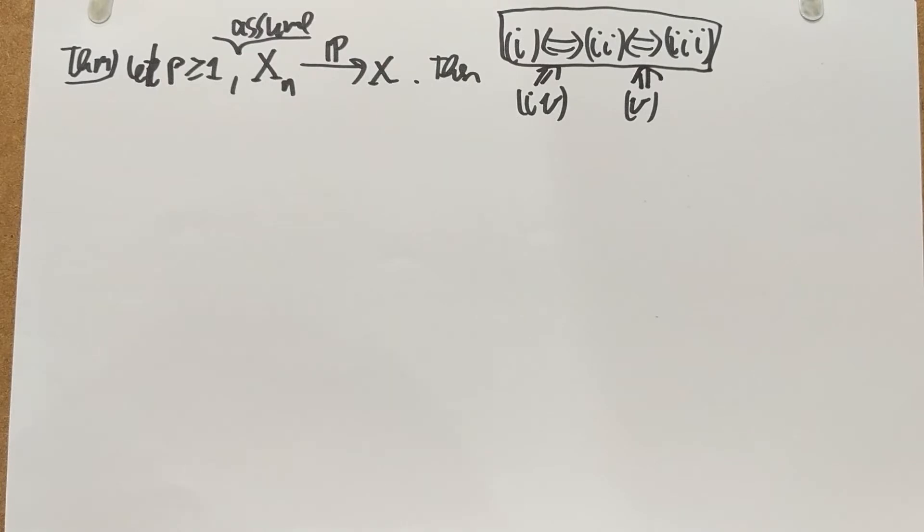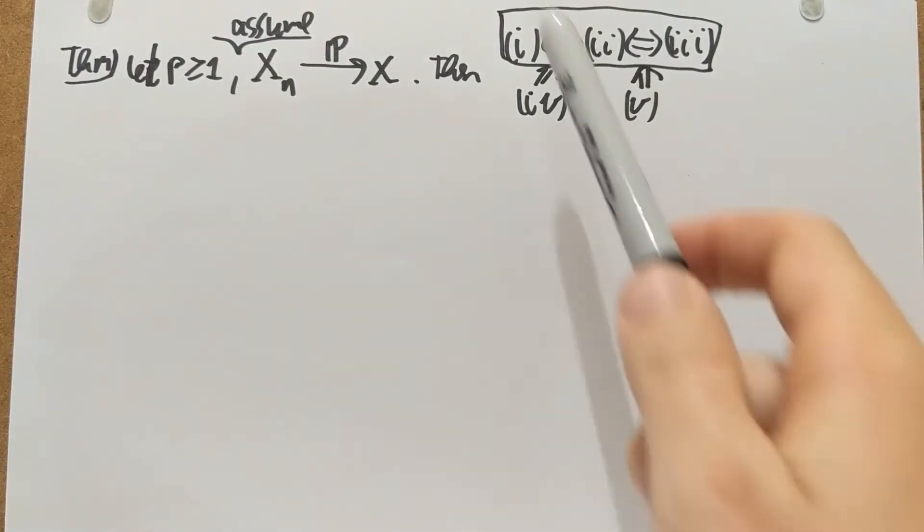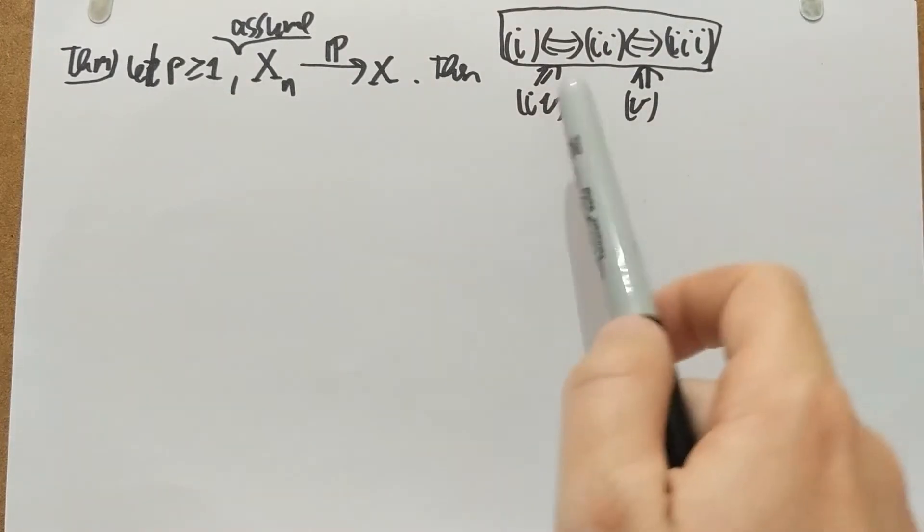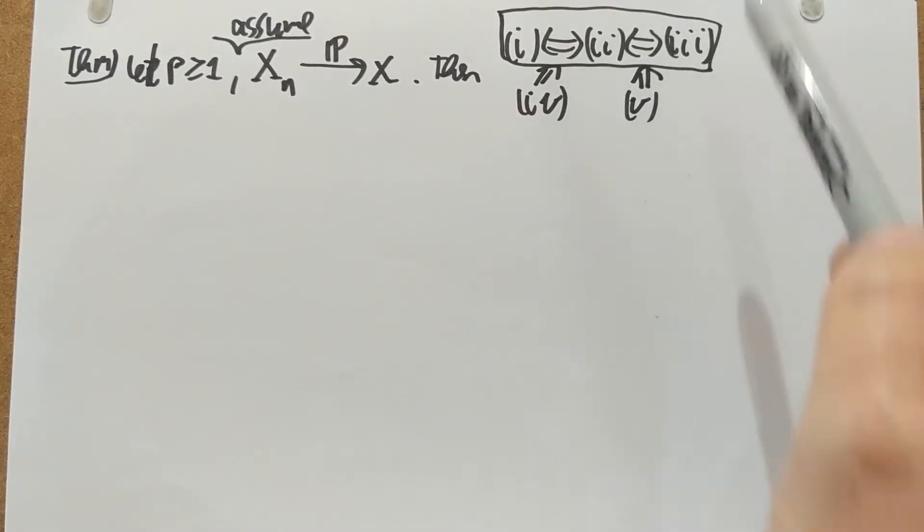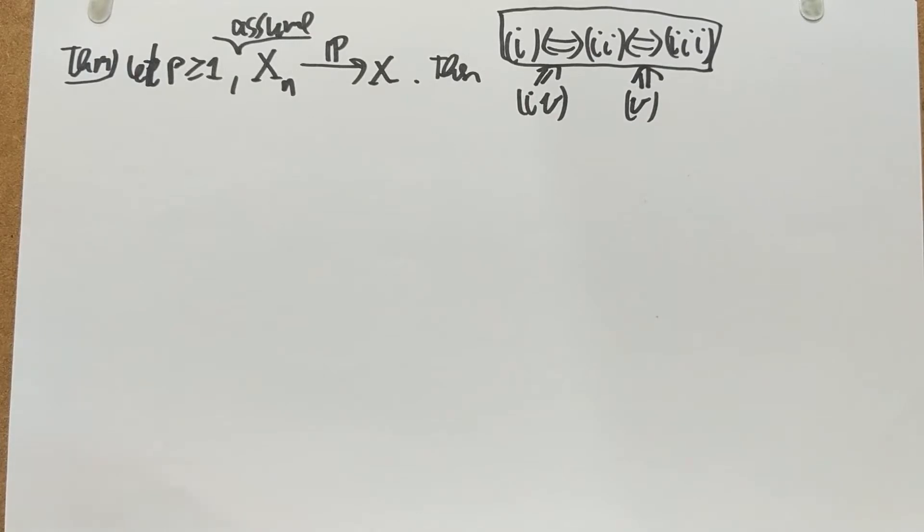So the theorem is that of the statements below, which I'm going to do in a second, one, two and three are equivalent, and four implies any of them, and five implies any of them.